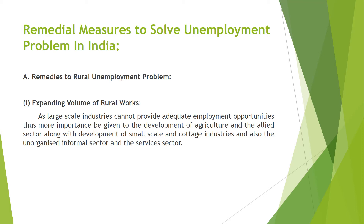One of the most important remedial measures is to expand the opportunities for work, especially in rural areas. In order to clear the backlog of unemployment and provide jobs to additional labor force, this expansion needs to be done rapidly in areas of both wage employment and self-employment. As large-scale industries cannot provide adequate employment opportunities, more importance should be given to the development of agriculture and the allied sector, along with development of small-scale and cottage industries and also the unorganized informal sector and services sector.